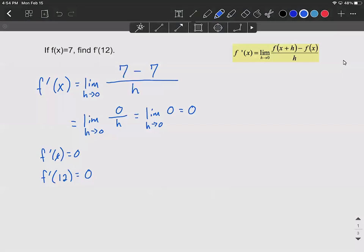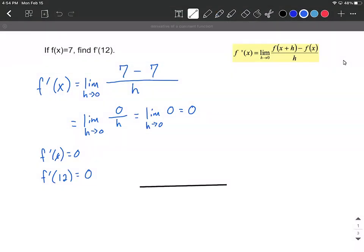Another way to think about this is we have a constant function. So that would be a horizontal line going across here. Derivative means the slope of the tangent line to the function.